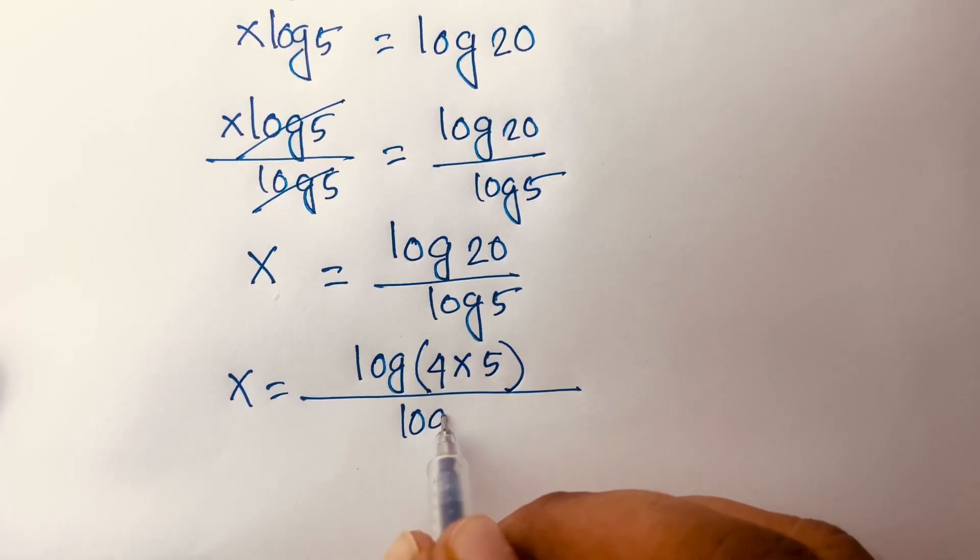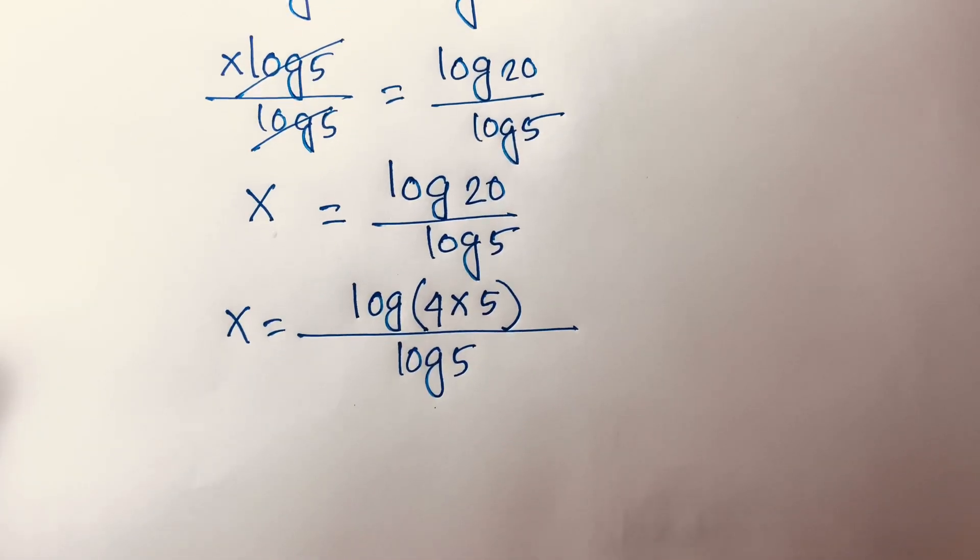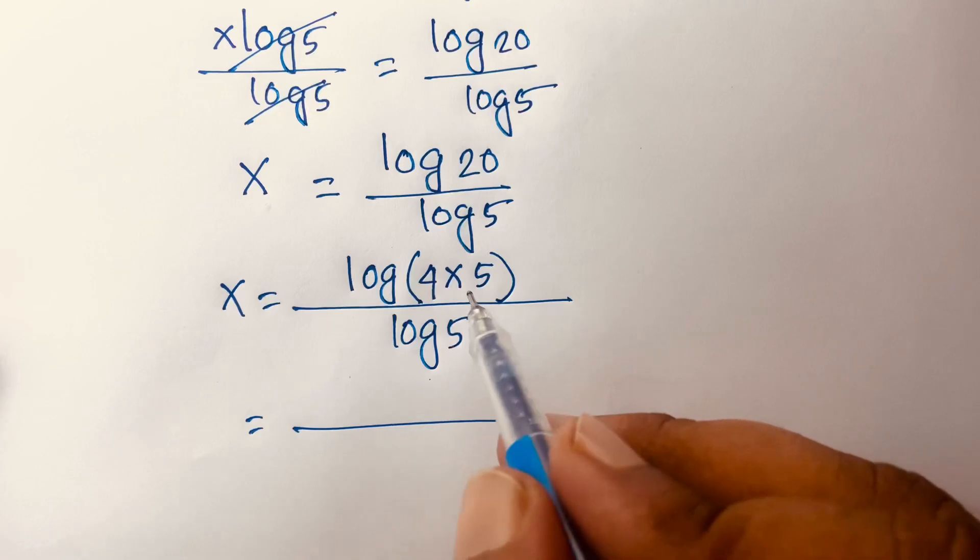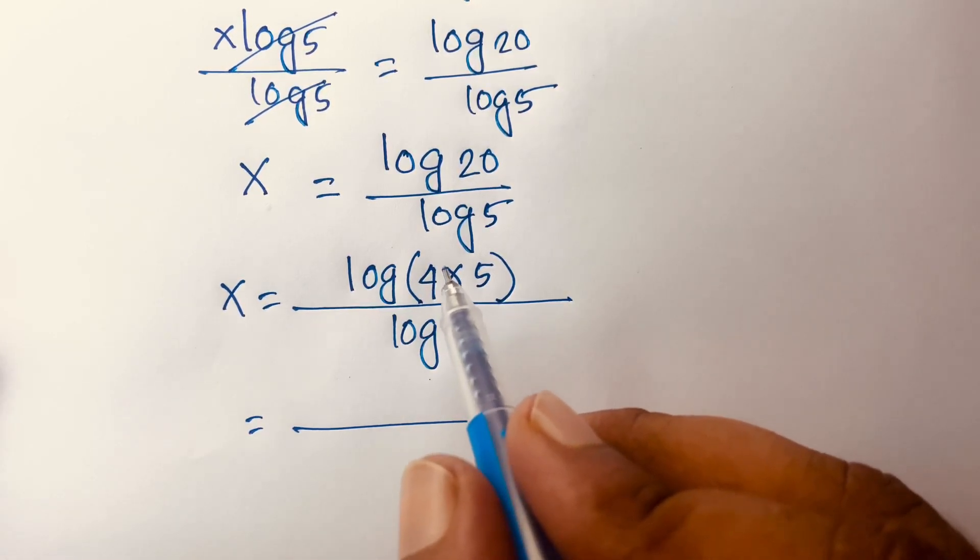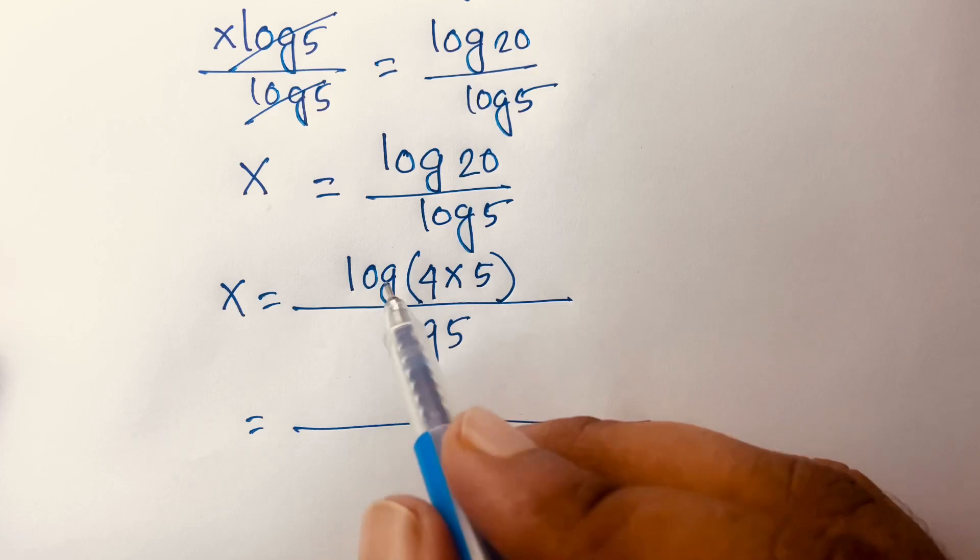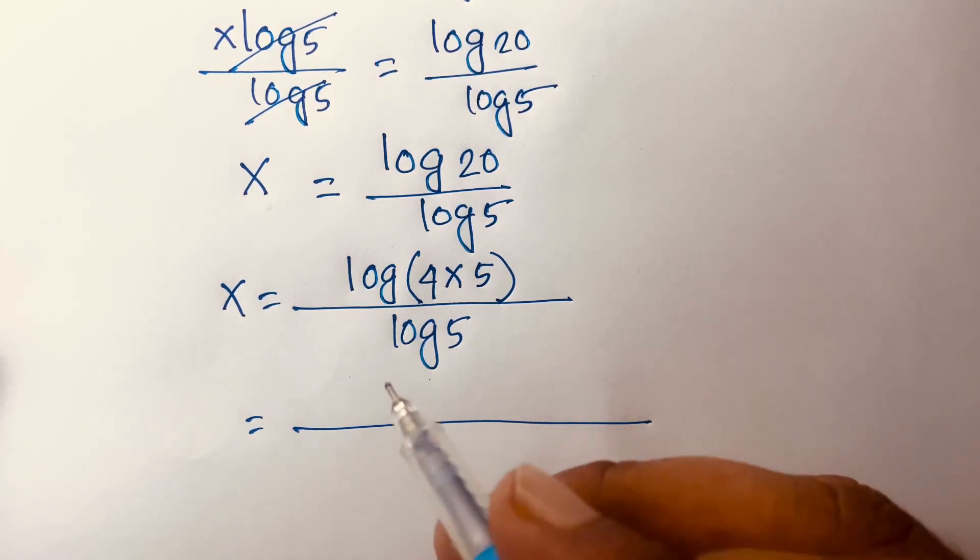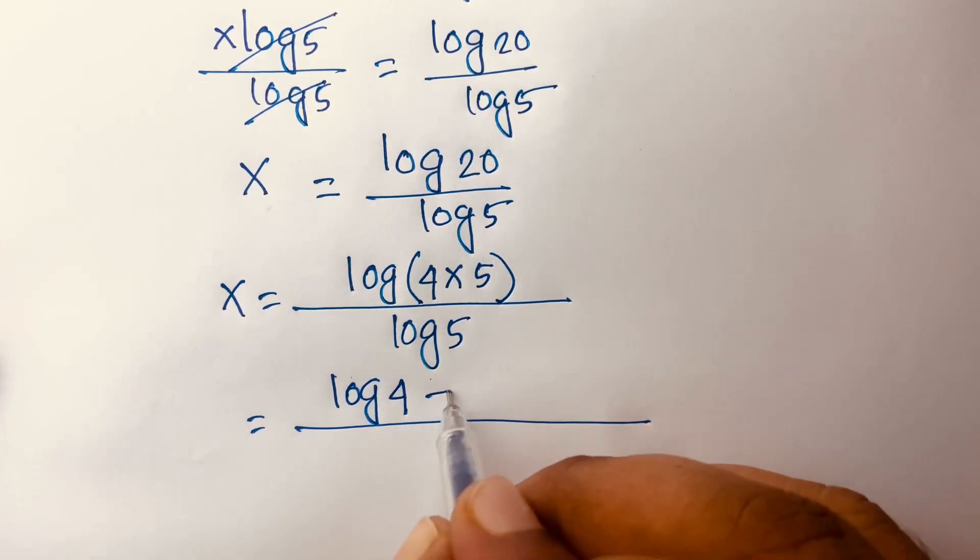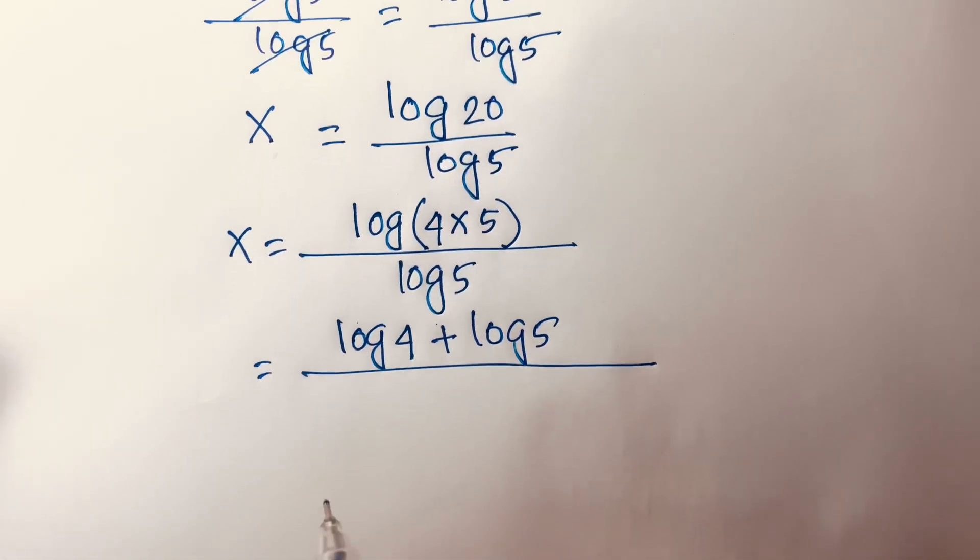And here is log5. Then I can say, here is log(4×5), so according to log(ab) rules, I can say it will be log(a) + log(b). So I can say here is (log4 + log5)/log5.